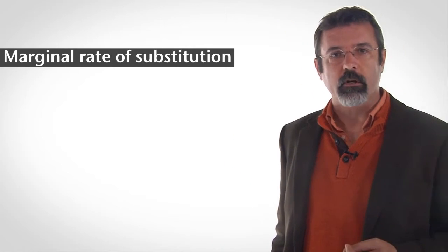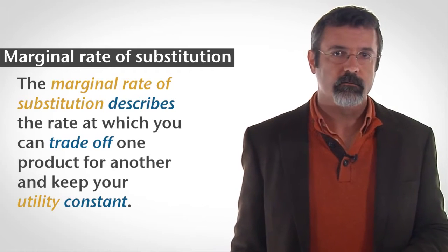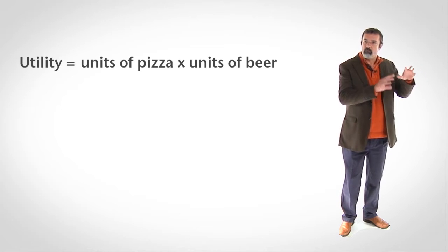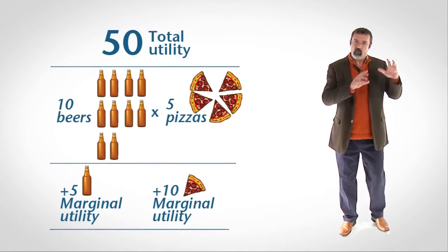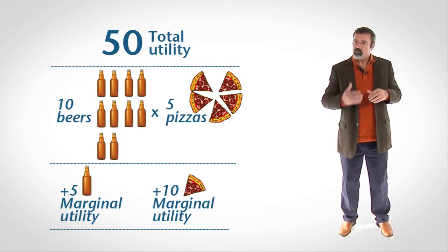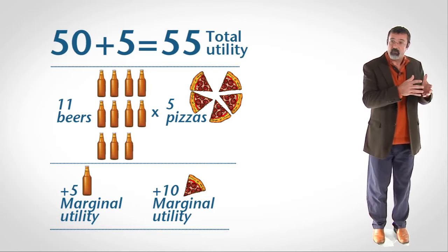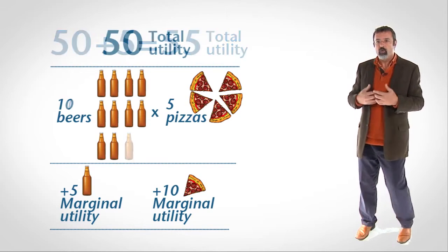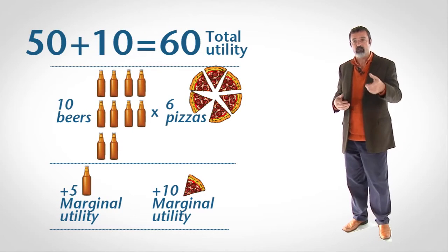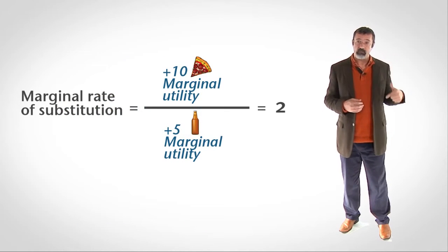The marginal rate of substitution describes the rate at which you can trade off beer for pizza and keep your utility constant. For example, suppose your utility is the units of pizza you consume multiplied by the units of beer you consume. If you have ten beers and five pizzas, your total utility is fifty. Your marginal utility of beer is five — if you consume one more beer, your utility rises by five from fifty to fifty-five. Your marginal utility of pizza is ten — if you consume one more pizza, your utility rises by ten from fifty to sixty. Your marginal rate of substitution is ten divided by five, or two.